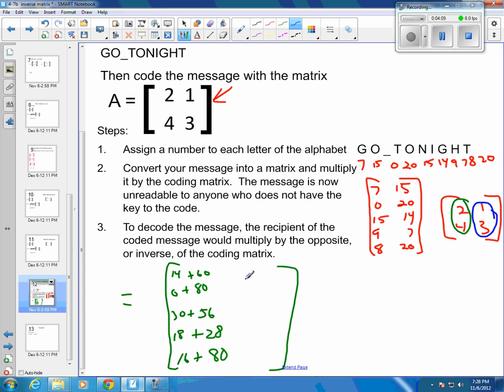And that does my first column. Then I want to multiply my second column. So 1 times 7 is 7, and 3 times 15 is 45. 1 times 0 is 0, and 3 times 20 is 60. 1 times 15 is 15, and 3 times 14 would be 30, 42. 1 times 9 is 9, 3 times 7 is 21. 1 times 8 is 8, and 3 times 20 is 60.